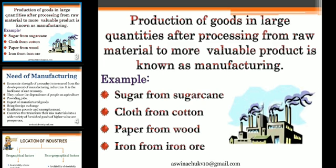In production and manufacturing there are three activities: Primary activities, Secondary activities, and Tertiary activities. Primary activities involve obtaining raw materials. Secondary activities involve processing those raw materials. Tertiary activities involve completing and supplying the finished goods and marketing them.